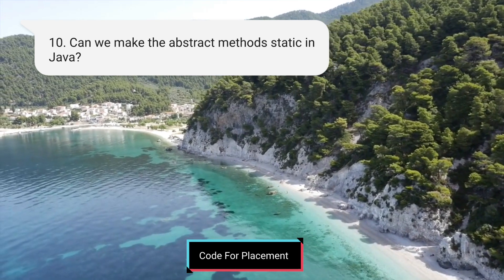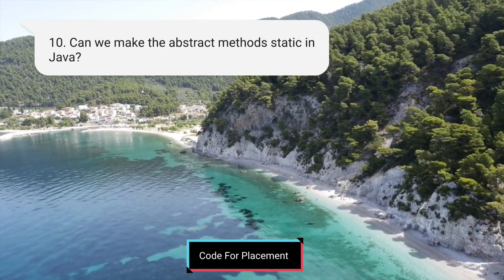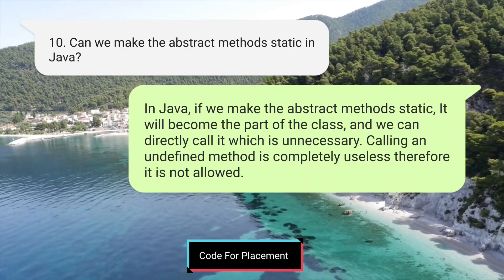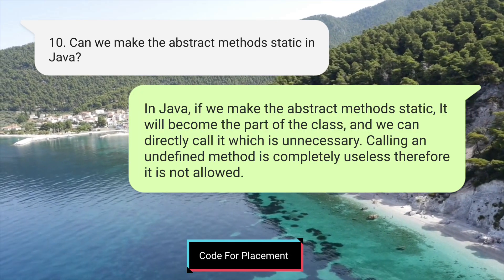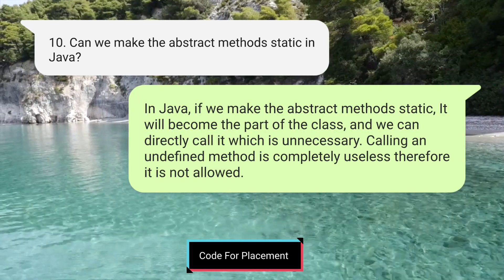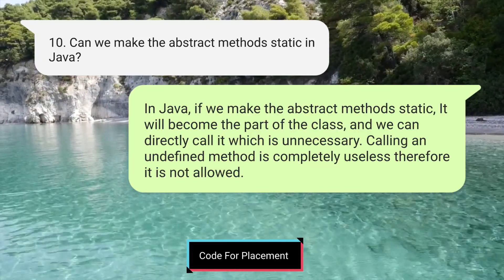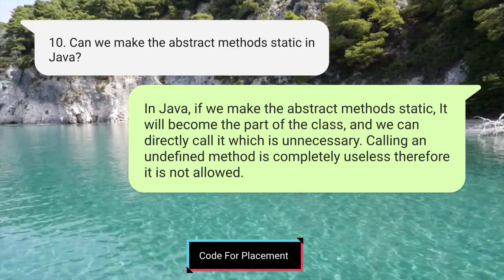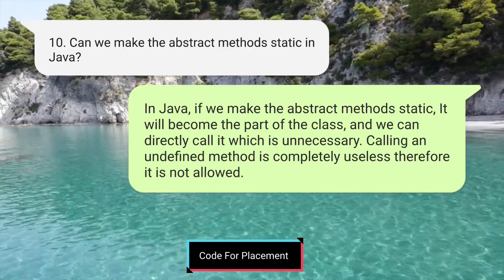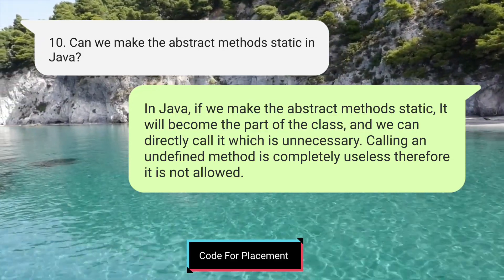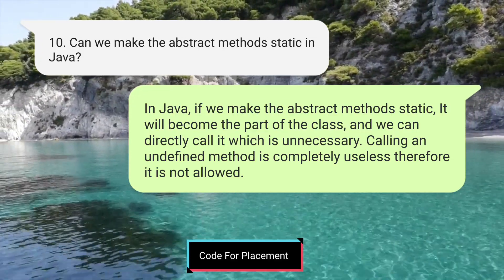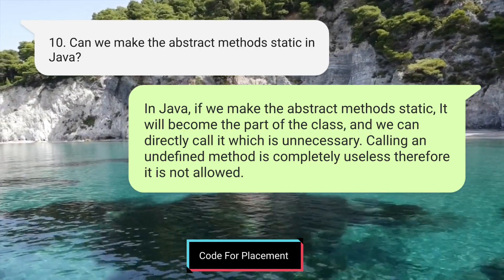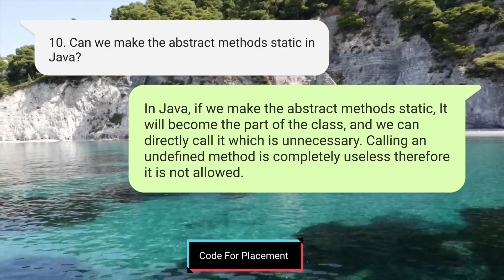The tenth question is: can we make an abstract method static in Java? If we make an abstract method static, it becomes part of the class and can be called directly. However, calling an undefined method is completely useless, therefore it is not allowed. That is why we do not use static with abstract methods.